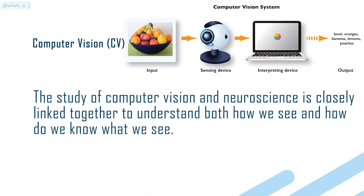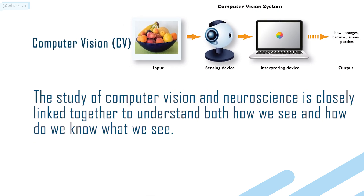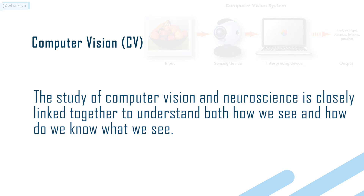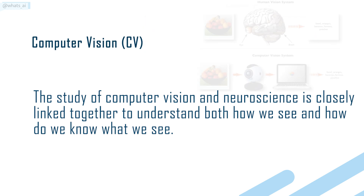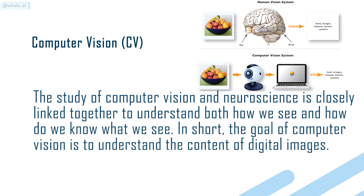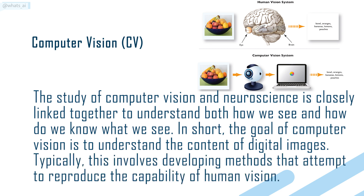The study of computer vision and neuroscience is closely linked together to understand both how we see, and how do we know what we see. In short, the goal of computer vision is to understand the content of digital images. Typically, this involves developing methods that attempt to reproduce the capability of human vision.